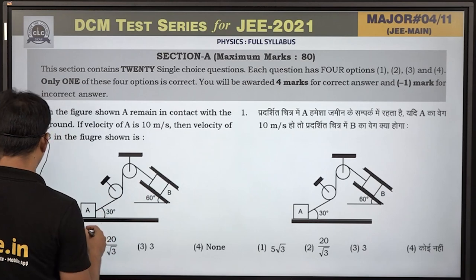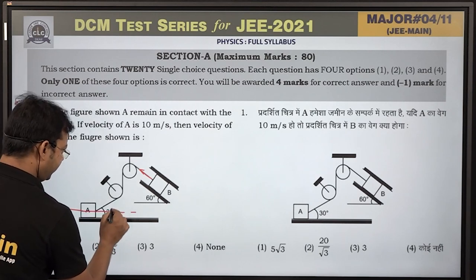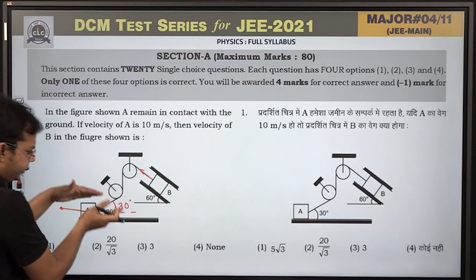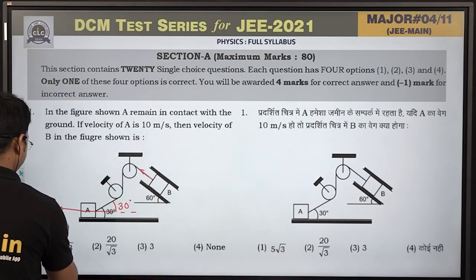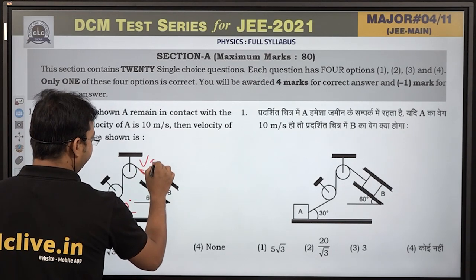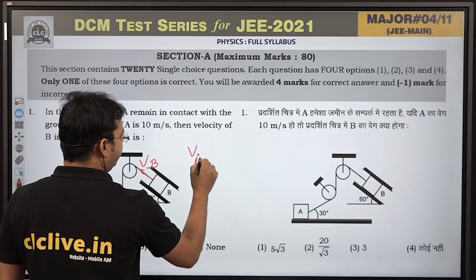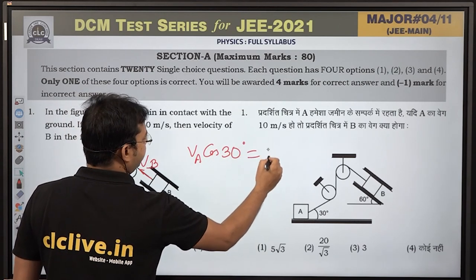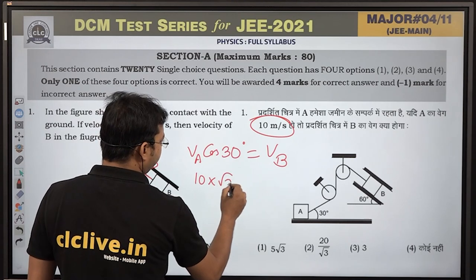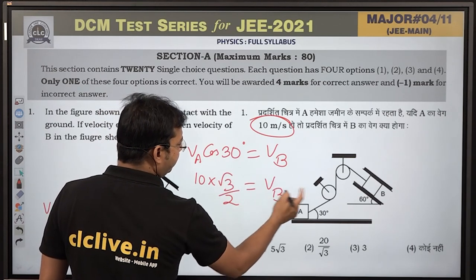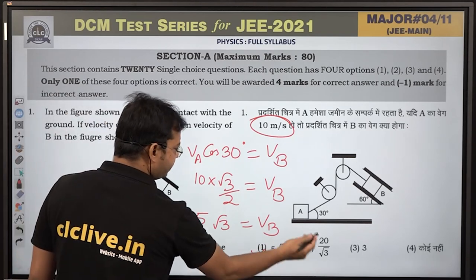B's movement along the string will be the same. This angle is 30 degrees, so V_A cos30° = V_B. V_A is given as 10 m/s, so 10 × (√3/2) = 5√3 m/s. The velocity of block B is 5√3 meter per second. Option number 1 is correct.